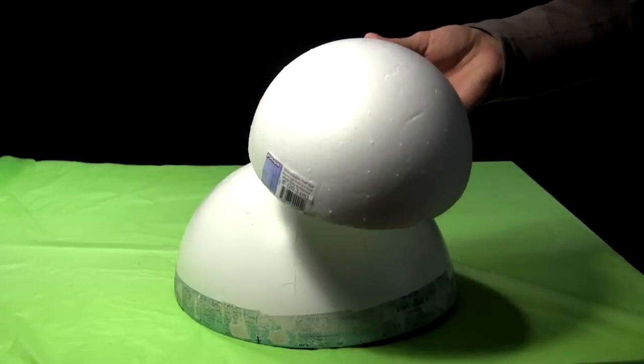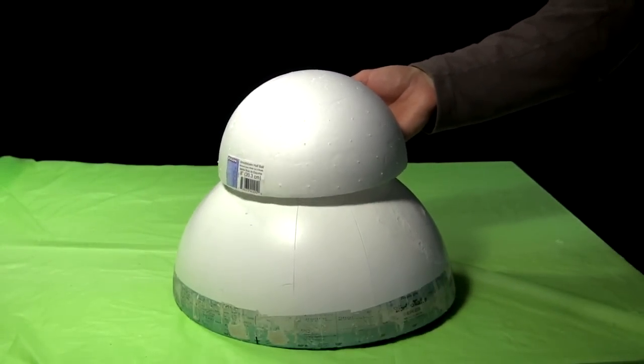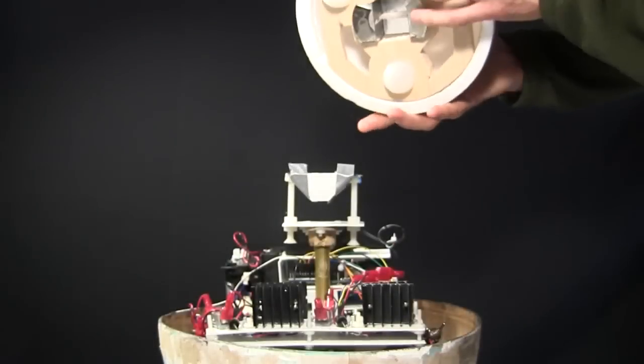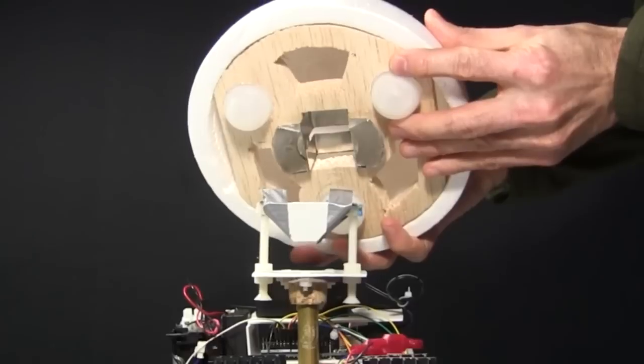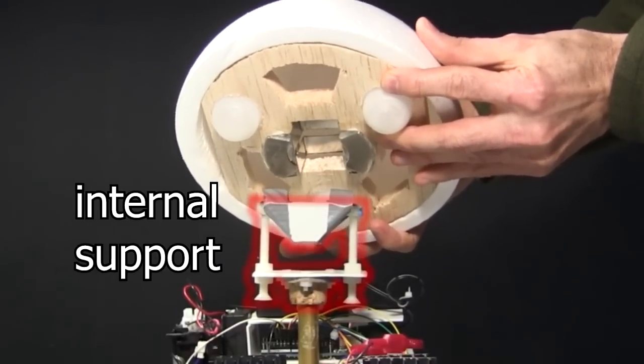For the head, I'll be using this 8 inch styrofoam hemisphere bought at Michael's, a large art supply store chain. But I need to arrange some magnets to make it stay on while the ball rolls. For that, some magnets are mounted under the head, while some are on this internal support structure, which I make next.